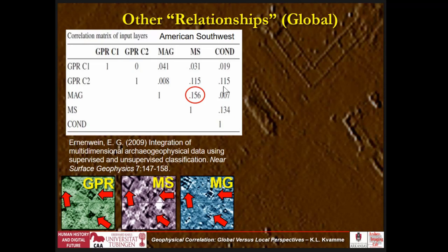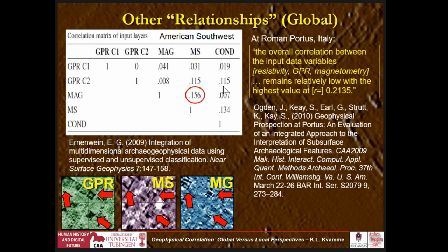Eileen Erdenwein did a study with me using part of the data where we had all these parallel anomalies. Her largest correlation was 0.156 — which says there's really no relationship. And Ogden and Nadella at a recent CAA meeting had resistivity, GPR, and magnetometry, and their largest was 0.21. So we're seeing there's no relationships, yet visually here we could see them. Look — it's the same. These are pit house structures, and again and again we see it. So how can correlation be low when we see strong correlation visually?